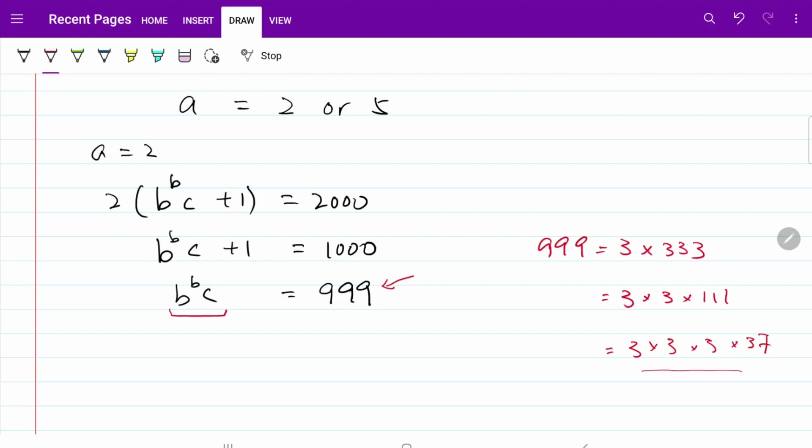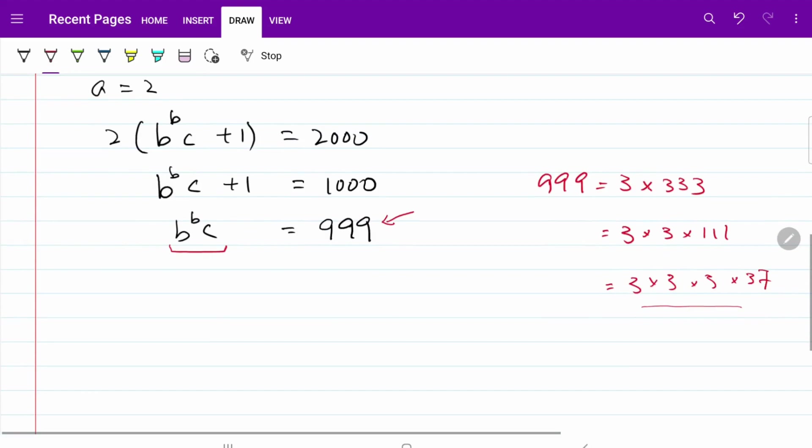If we consider all the numbers that we have here, we notice that all four of them are prime numbers. And on top of that, I can rewrite this to be 3 to the power of 3 multiplied by 37. So, substitute that into our expression here, I can say that 999 is equal to 3 to the power of 3 multiplied by 37.